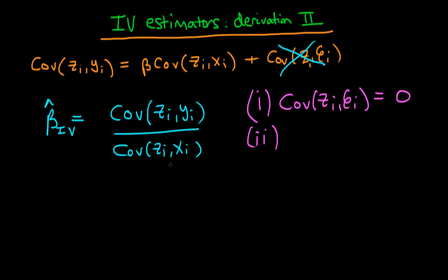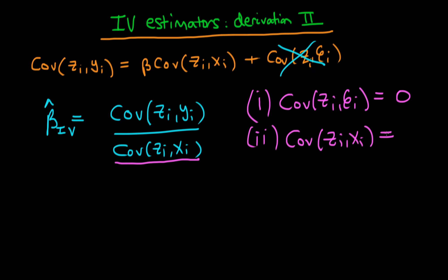But there is another condition which our instrument has to satisfy. You can see it here in the expression for the IV estimator if you examine the denominator. Notice that if this denominator gets really, really small, then the expression blows up because you've got a number on the top divided by a really, really small number, which in the limit that this number on the bottom goes to 0, our IV estimator completely blows up. So we better have that the covariance of Z_i with X_i doesn't equal 0.